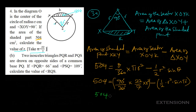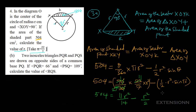Breaking this down: 90 over 360 simplifies, giving us 11R squared over 14 for the sector part. For the triangle part, sine 90 always gives us 1, so that becomes R squared over 2. So we have 504 equals 11R squared over 14 minus R squared over 2.